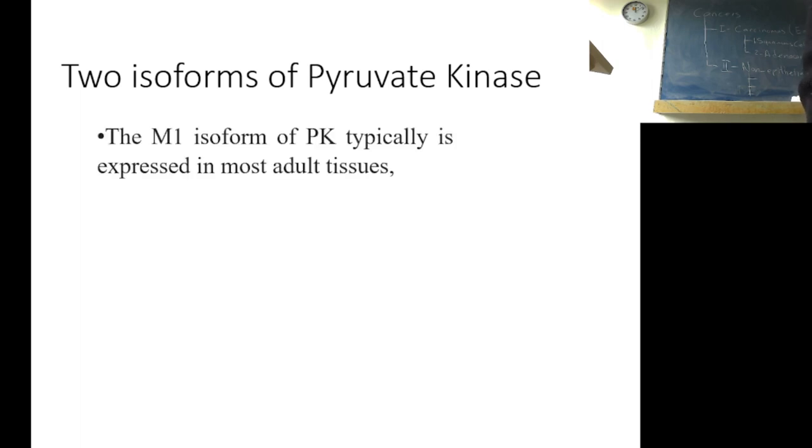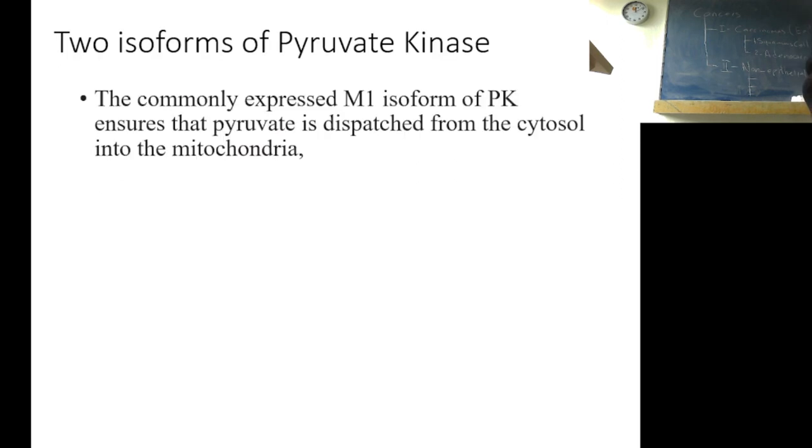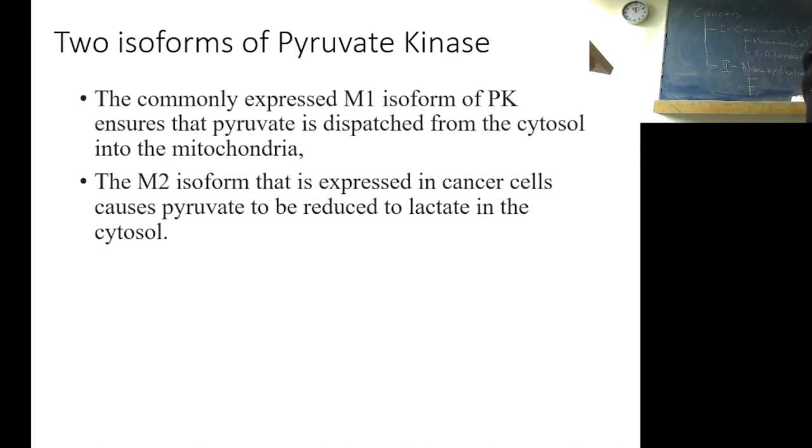There are two isoforms of pyruvate kinase, M1 isoform and M2 isoform. M1 isoform of PK typically is expressed in most adult tissues. But there is a second isoform, which is M2, that is expressed by early embryonic cells, rapidly growing normal cells and cancers. The commonly expressed M1 isoform of PK ensures that pyruvate is dispatched from the cytosol into mitochondria. M2 isoform that is expressed in cancer cells causes pyruvate to be reduced to lactate in the cytosol.